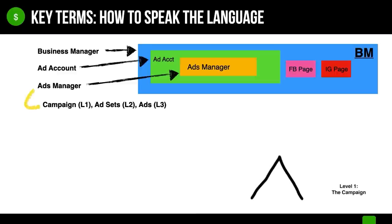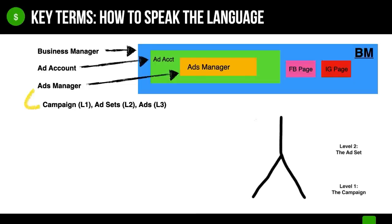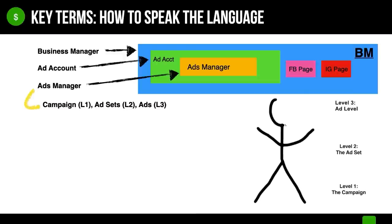The campaign is like the legs because it's what everything else stands on. At this level, you'll create your campaign, name it, and choose your objective. Next is the ad set level, or level two — this is like the body of your campaign, and this is where you'll choose your placements, your targeting, and your budget. Then after the ad set level is level three, the ad level. Level three is like the head or the face of your campaign because it's what everybody sees — and this is where you create the actual ad itself.